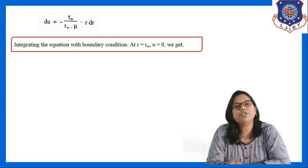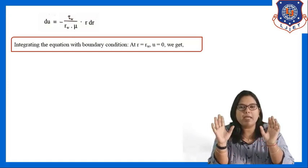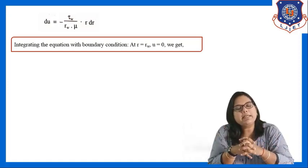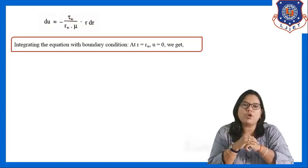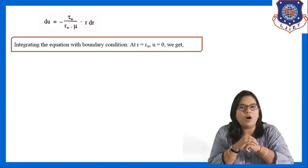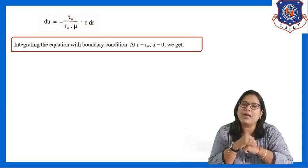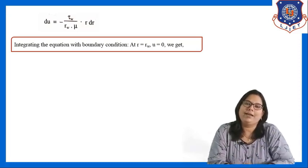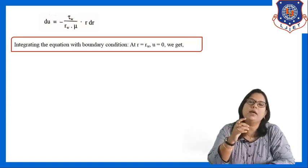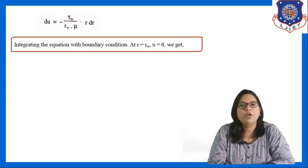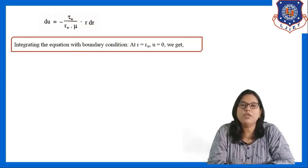If you remember the shear stress distribution in pipe derivation, we took one circular pipe through which the fluid is flowing, and we follow that same condition here. At r = r_w, meaning when the radius equals the wall radius, the velocity at the wall is always 0, while at the centre velocity is always maximum. That is why we apply the limit r = r_w, u = 0 to derive the velocity distribution equation for laminar flow.